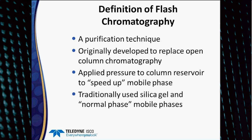Flash chromatography is a purification technique originally developed around 1978 by Dr. Still, and it was set up to replace open column chromatography. The idea was simply to apply pressure to the column reservoir to speed up the flow of mobile phase through an open column. Traditionally, the solvent has been normal phase and the stationary media has been silica gel, up until about 2007–2008.